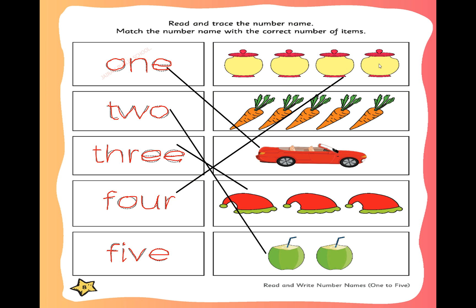Are you completed, children? Shall we go to next one? Yes. Now move on to next page. Take this page. Read the question, all of you. In this exercise, what we have to do? We should color the correct set of objects. 1. What is the number name given? O-N-E, 1. Which one we have to color? This one? No. This one? No. This one? Yes. Very good. Color it. What is the color of tomato? Color the correct set of items.